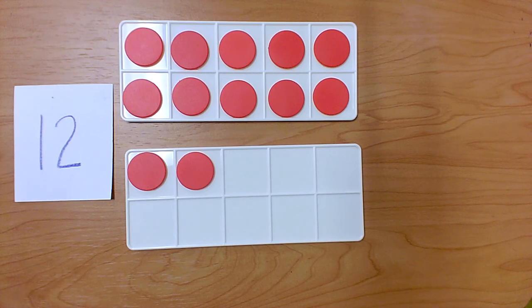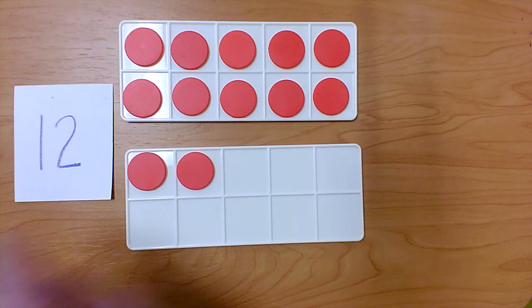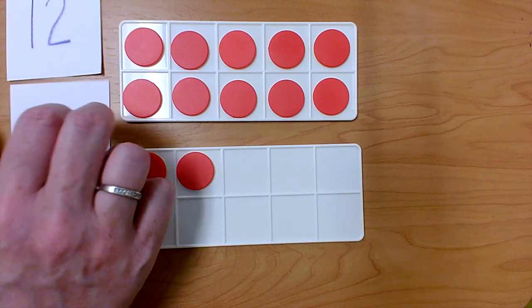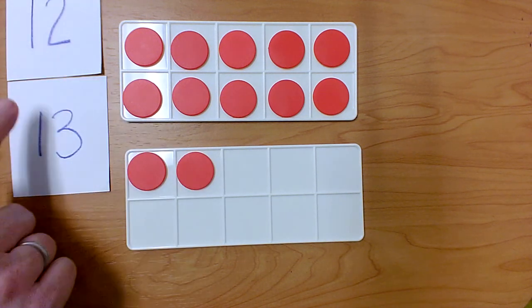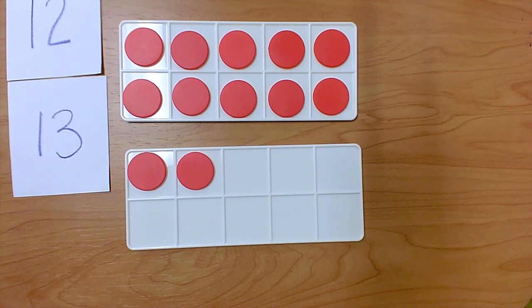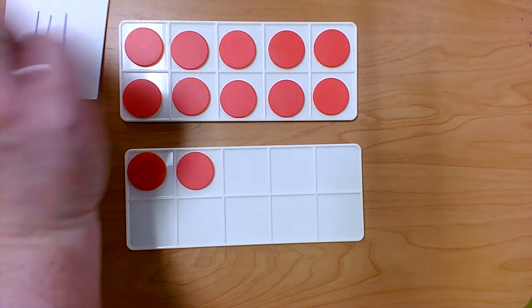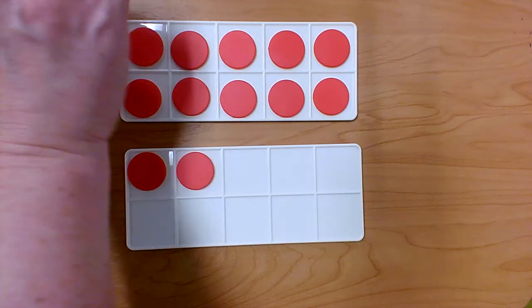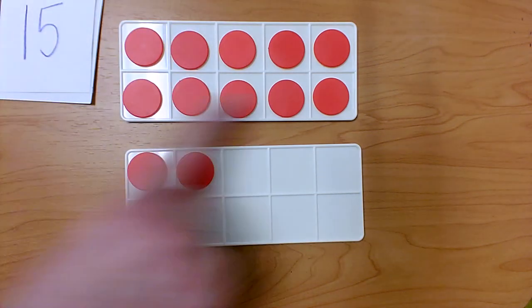Thank you so much for reading about place value with me. It's very important, especially in teen numbers, because teen numbers always have one group of 10. That's why teen numbers always start with a 1. 12 starts with a 1. 13 starts with a 1. 14 starts with a 1. What number is one more than 14? You're right.